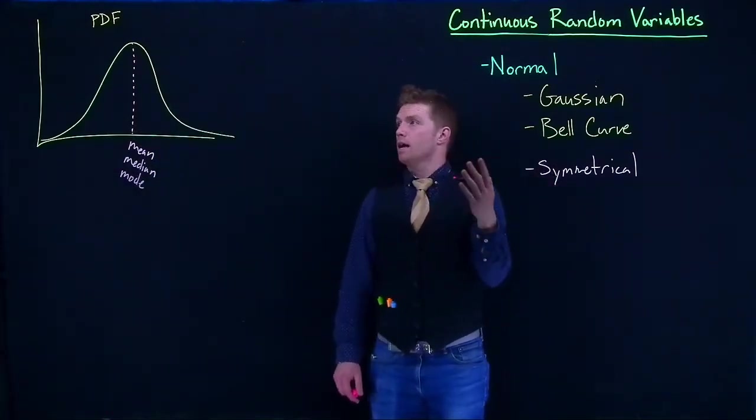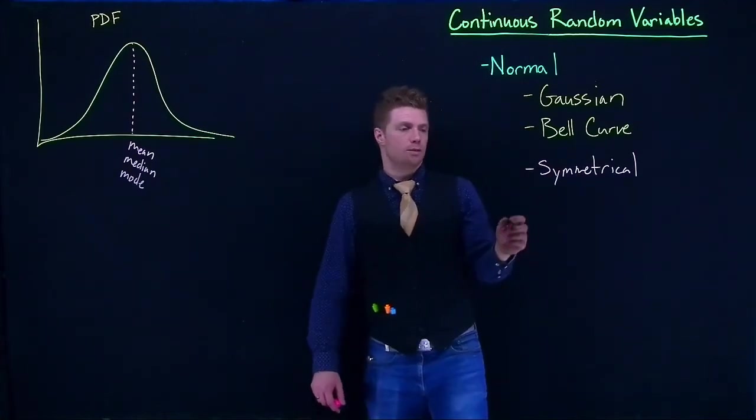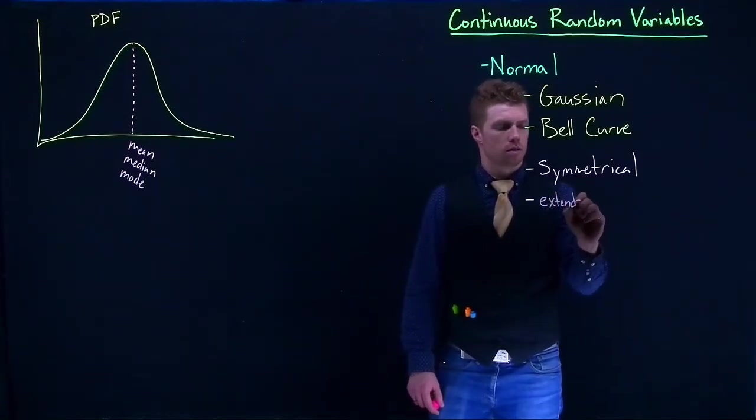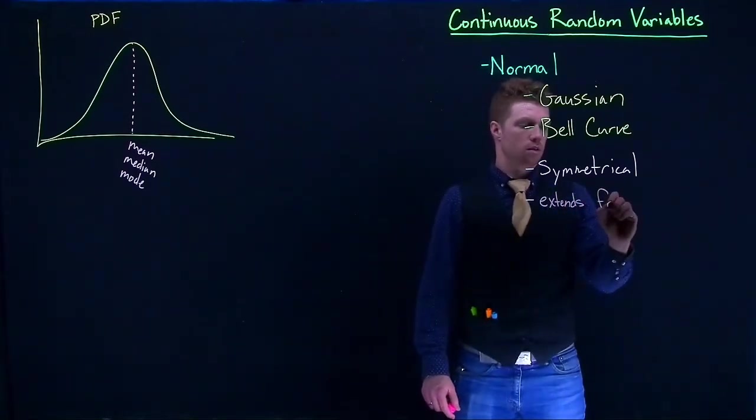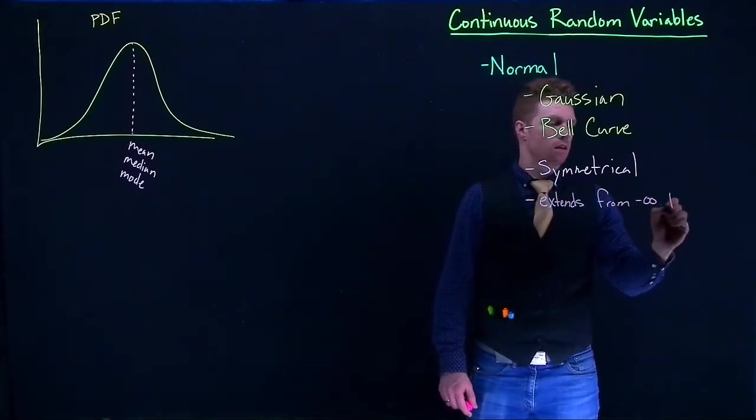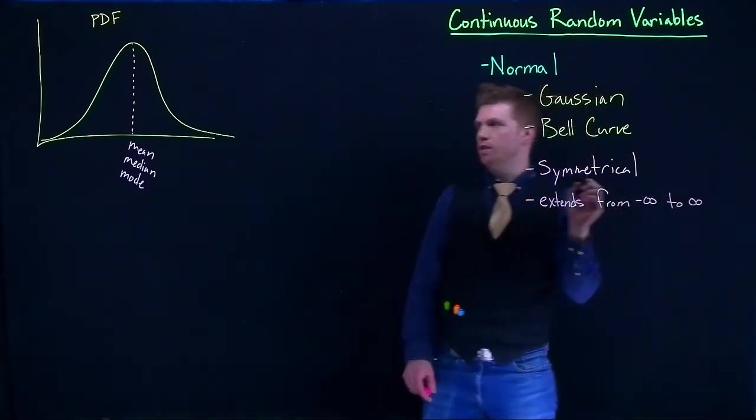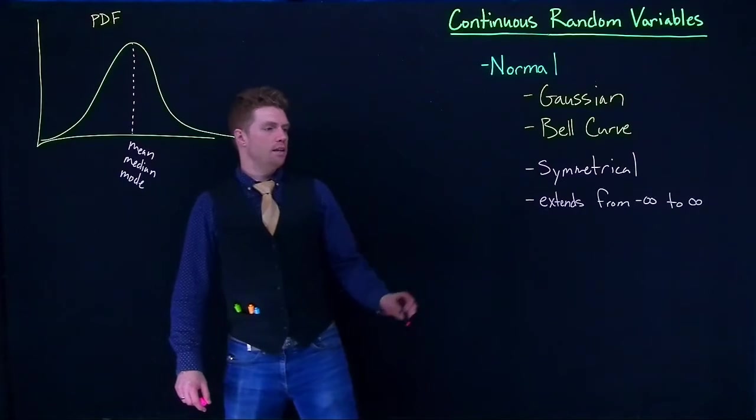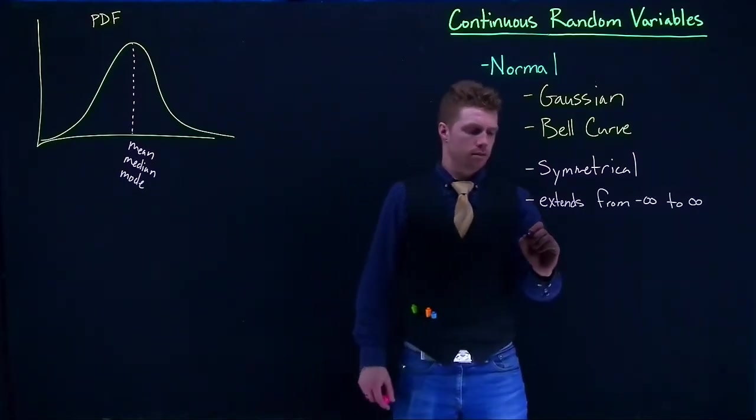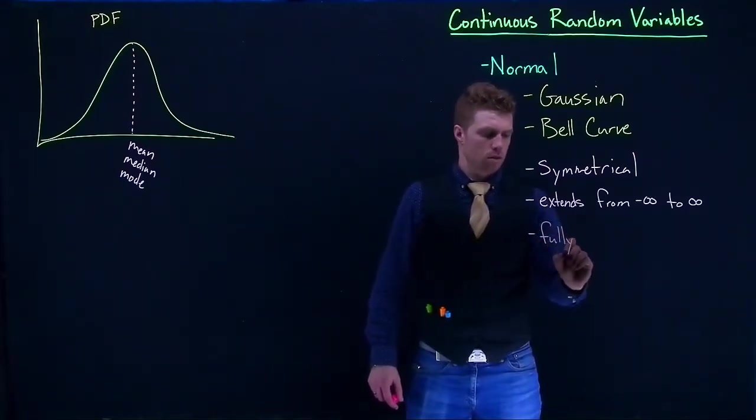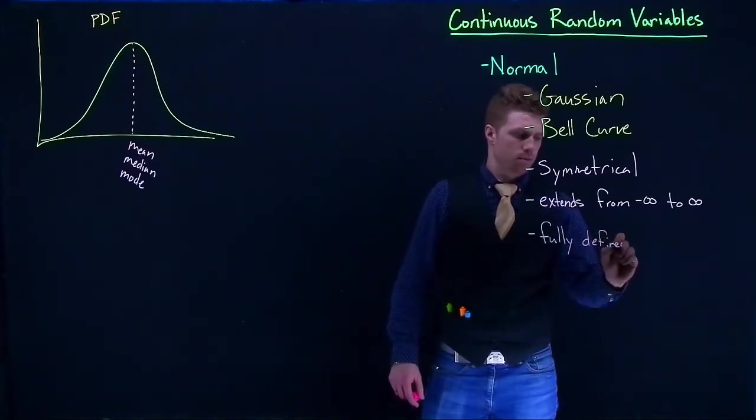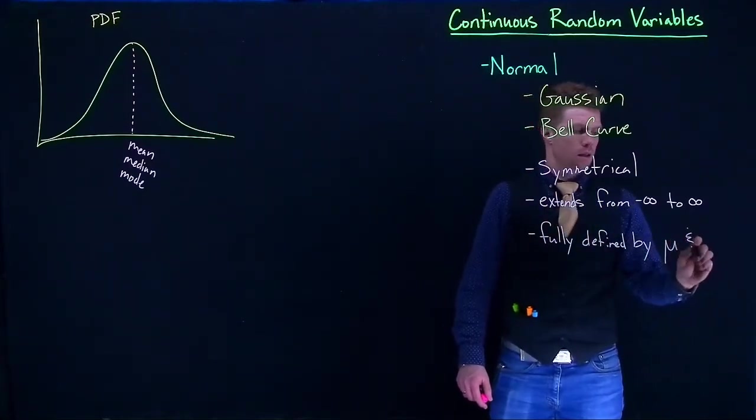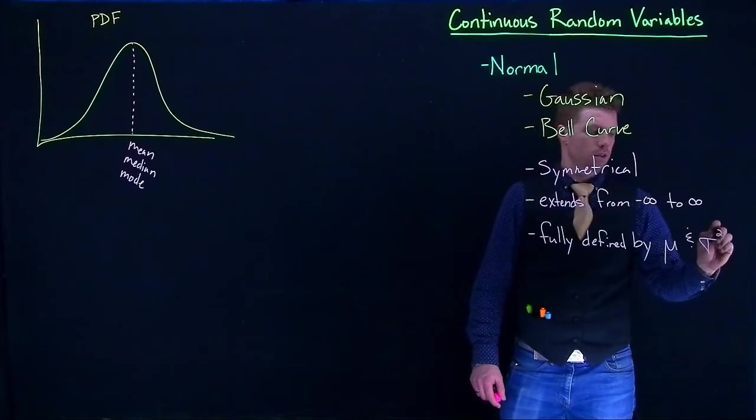So that's kind of handy about our normal distribution. It's nice, it's symmetrical, it extends from negative infinity to positive infinity. So this thing stretches off to both ends indefinitely, and it's fully defined by mu and sigma squared, like our variance.